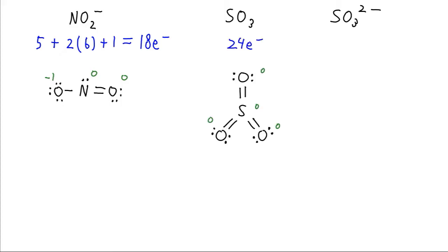Now, sulfur trioxide has 24 electrons. And I'll just show you the result that you get.